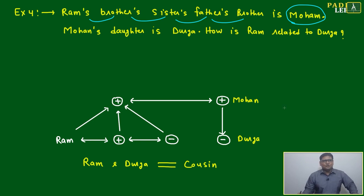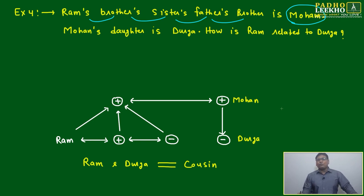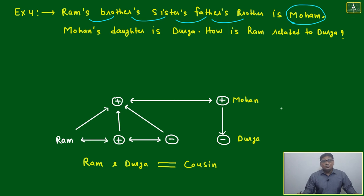How many apostrophe S's are used? 1, 2, 3, 4 — four apostrophe S's have been used to define one sentence.